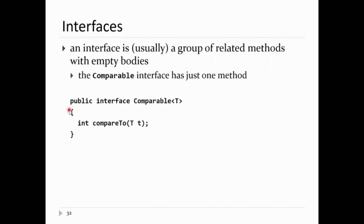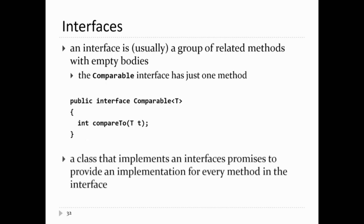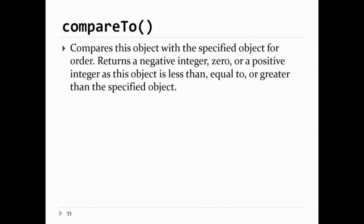If you actually go and look at the source code for Comparable, it looks like this: it's declared as public interface — not a class. The name is Comparable, with angle brackets, so you know it's a generic interface. It has one method: compareTo, and it returns an int. A class that implements an interface promises to provide every method in the interface. So if we're going to implement the Comparable interface, we have to put compareTo into our class.